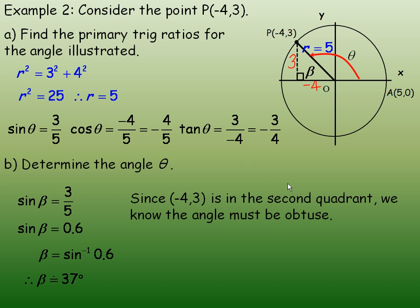Now, since negative 4, 3 is in the second quadrant, we know that angle must be obtuse. This angle is bigger than 90 degrees. So in order to find the angle, we would go 180 minus the beta, which is the 37. And so angle theta is 143 degrees. So that is that angle right there. It is over in the second quadrant.